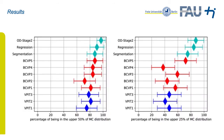We show the percentage of the area selected by a participant having a mitotic count in the upper 50% of the distribution on the left, and the upper 25% on the right. In each case, the models outperformed the pathologists, and the two-stage object detection model was the best.